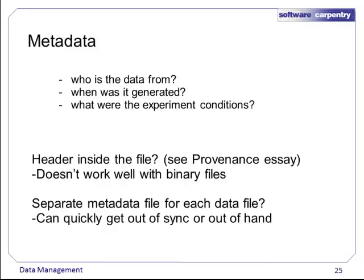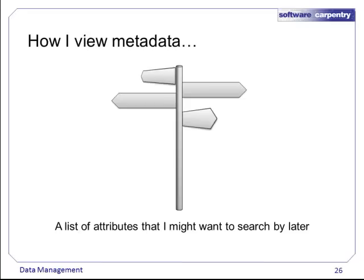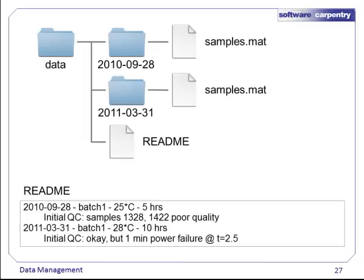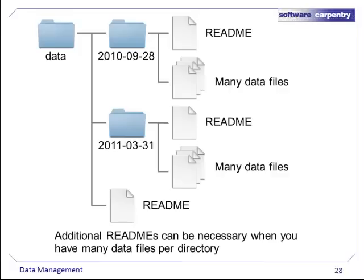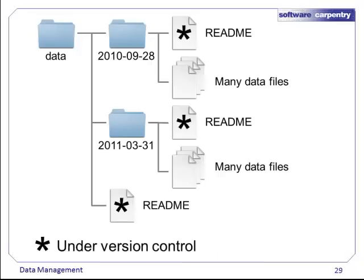We could put a header inside the file — we discussed that in our essay on provenance — but this doesn't work well with binary files. We could create a separate metadata file for each data file, but this can quickly get out of sync or out of hand. I think of metadata files as information kiosks: you place a small number in strategic places so that people who are lost can find what they want. I use them as flat databases to list various attributes I might be interested in searching by later on. The previous approach can be improved by adding a README file. If you have more than a few data files, or you are downloading data from various websites, it quickly becomes critical to add metadata files describing all the files in each directory — where they came from, their versions, and any other important information. Because these metadata files undergo many changes, might be edited by multiple people, and are usually line-based text files, they are perfect candidates for version control.